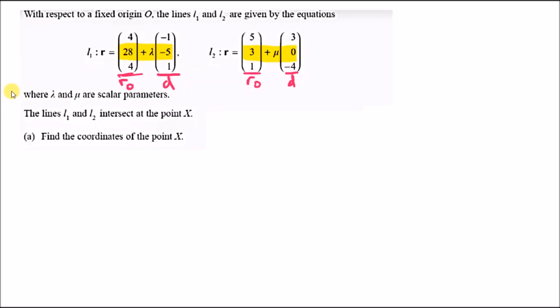The question tells us that lines L1 and L2 intersect at point X. You've got a picture with two lines intersecting somewhere here, and we'll call this point X. We just have to find the coordinates.